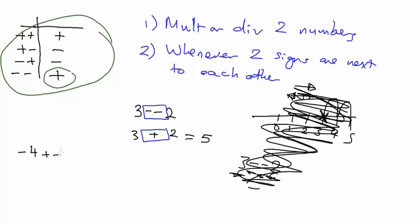Let's try something harder: minus four plus minus three minus minus two. You never want to see two signs next to each other. A plus and a minus becomes a minus; a minus and a minus becomes a plus. So this whole equation becomes minus four minus three plus two.